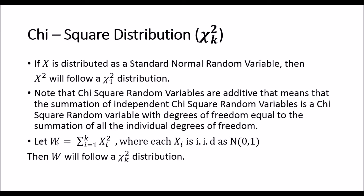If a random variable w equals the summation from i=1 to k of x_i squared, where each x_i is independently identically distributed as a standard normal random variable, then each x_i squared is chi-squared with 1 degree of freedom. Summing k such variables gives a chi-squared distribution with k degrees of freedom.